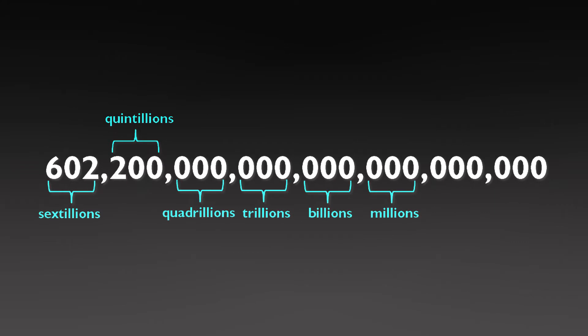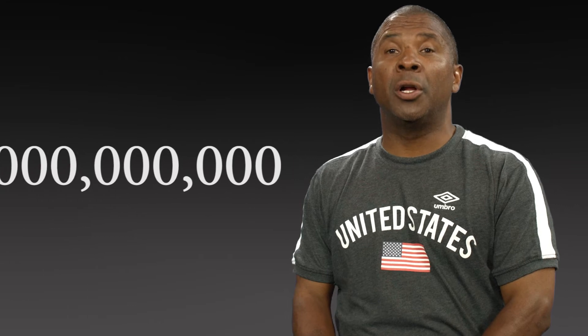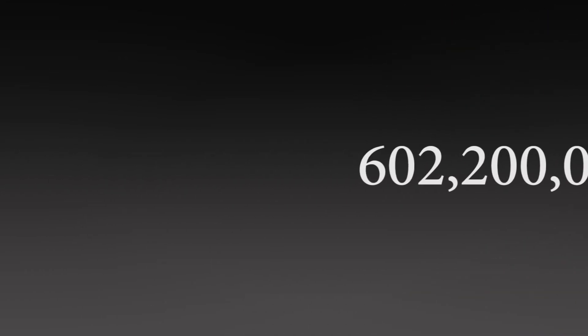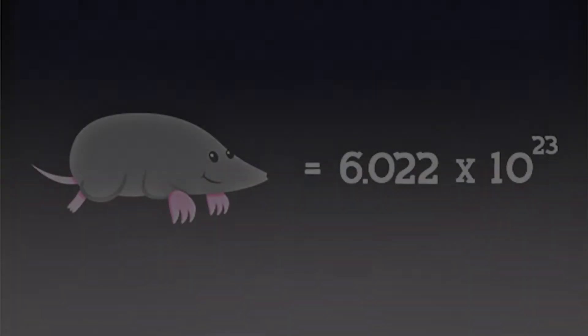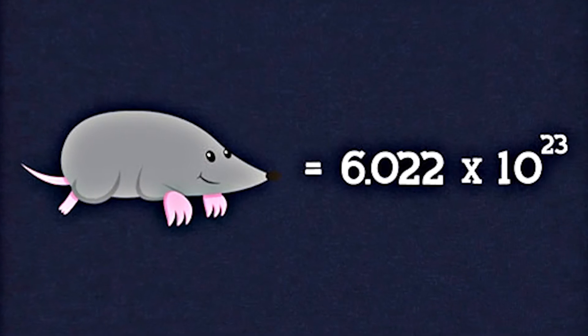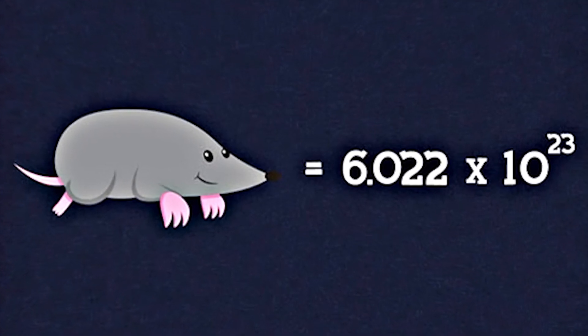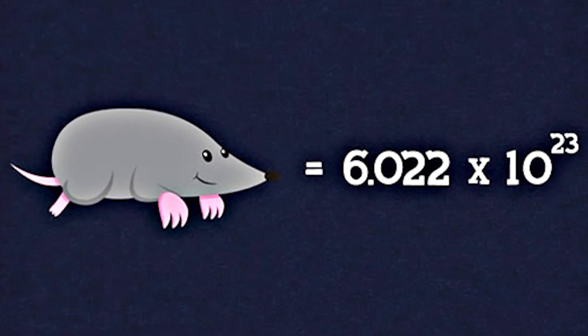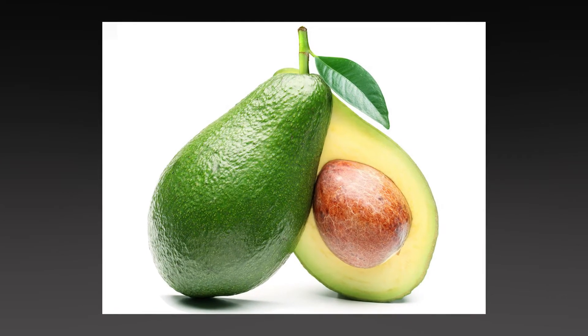That is 602 followed by 21 zeros. That is a huge number. Or we can write 6.022 times 10 raised to the 23rd power for short. This is called Avogadro's number.